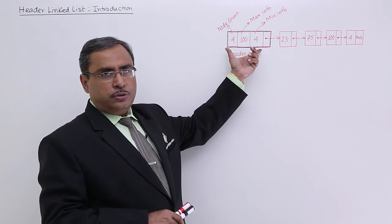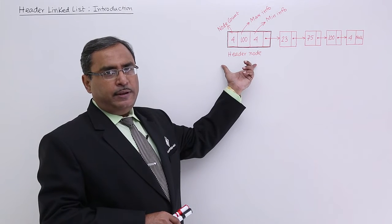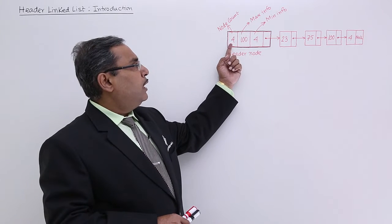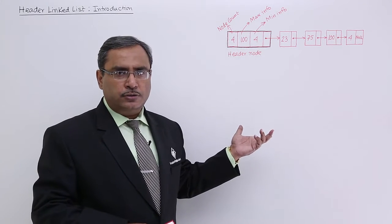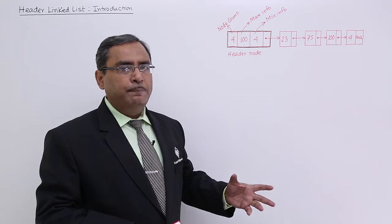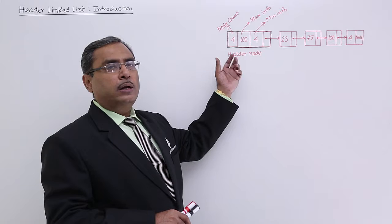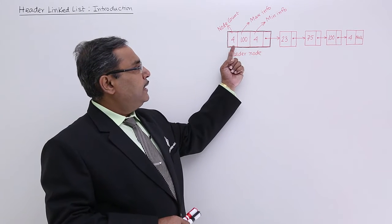But the header node has a structure defined differently. It has one, two, three fields - it can have 100 fields depending on our implementation. The particular node structure we've made here is as follows.